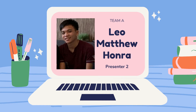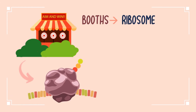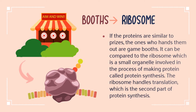Good day everyone, my name is Matthew, and I will be your other tour guide for this park. I hope you enjoy and learn something from this experience. An amusement park needs a place where visitors can claim their prizes. A booth is designed to store prizes which will later be handed out to visitors. A booth is like a ribosome in a cell — ribosomes are small organelles that are vital for protein synthesis.